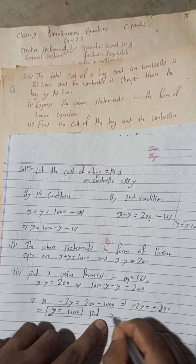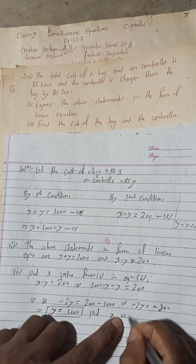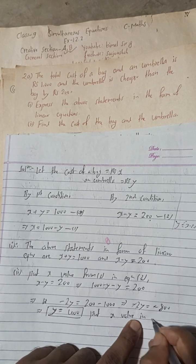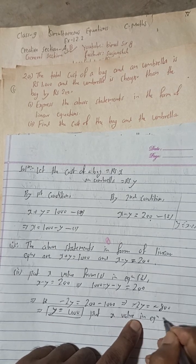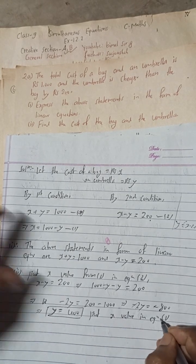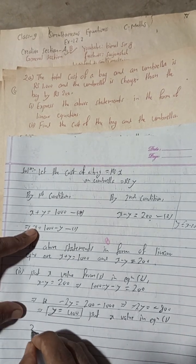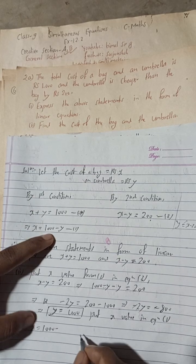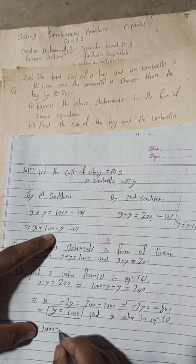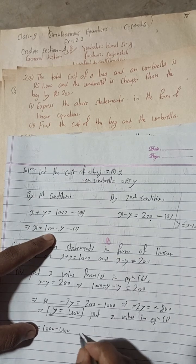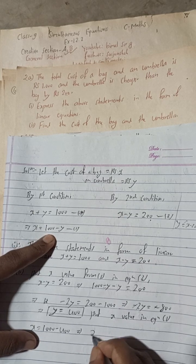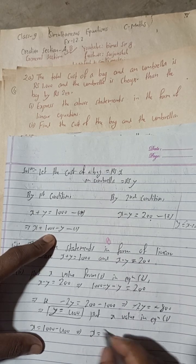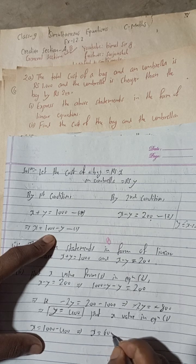Now put the Y value into equation 1. X is equal to 1000 minus Y, which means 1000 minus 400, so X is equal to 600.